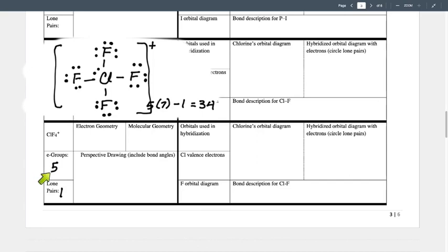So from the number of electron groups, we're going to determine the electron geometry. Five groups is trigonal bipyramid. What's the molecular geometry? Seesaw. Because with the trigonal bipyramid, when you have one lone pair on there, it's going to go into the equatorial position, because there's a little more space there. And that's going to give you the seesaw.